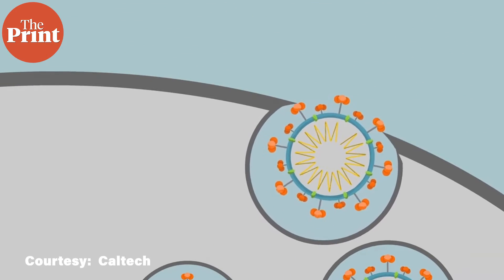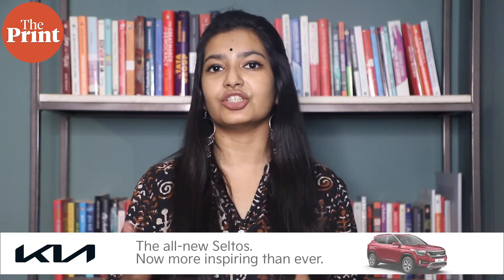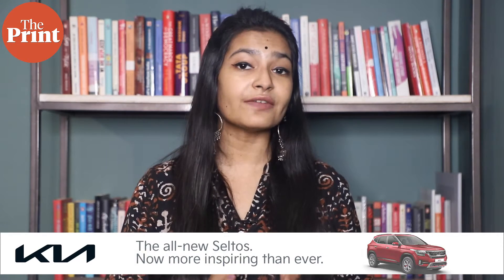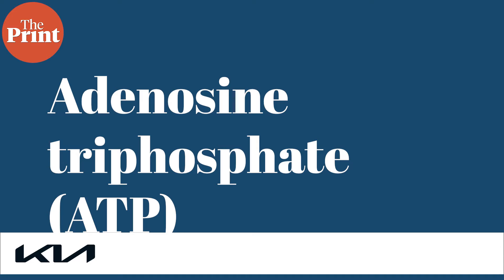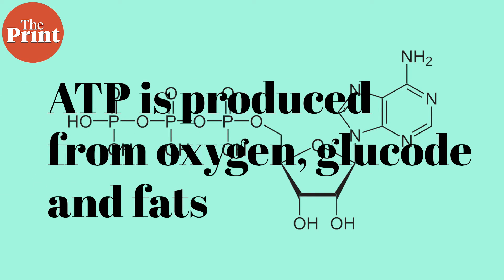Every biological process needs a source of energy to function. Our cells release the energy stored in food molecules through a series of reactions that produce energy-rich molecules such as adenosine triphosphate (ATP) and nicotinamide adenine dinucleotide (NADH). RNA viruses like SARS-CoV-2 cannot produce their own energy supply, so what they do is use the ATP from the host cells to fuel the energy requirements of viral replication. But once a person is dead, the cells stop making this ATP.